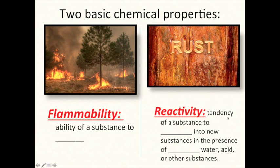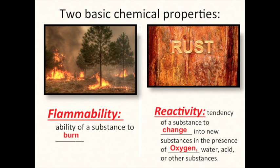The two basic chemical properties you need to know are flammability and reactivity. Flammability is the ability of a substance to burn — here's a forest fire burning. Reactivity is the tendency of a substance to change into new substances, usually in the presence of oxygen, but it could also be water, acid, or other substances. Rust is basically a slow burn of metal — it's an oxidation process, just like wood is being oxidized as it burns, only much more slowly.